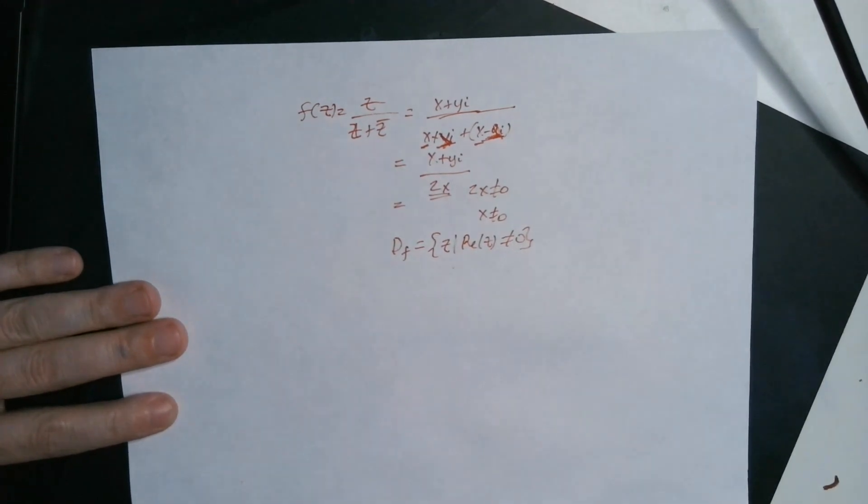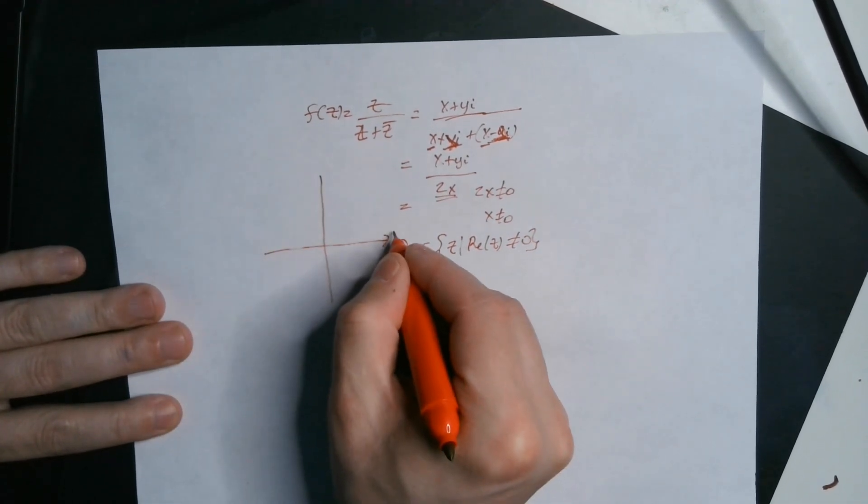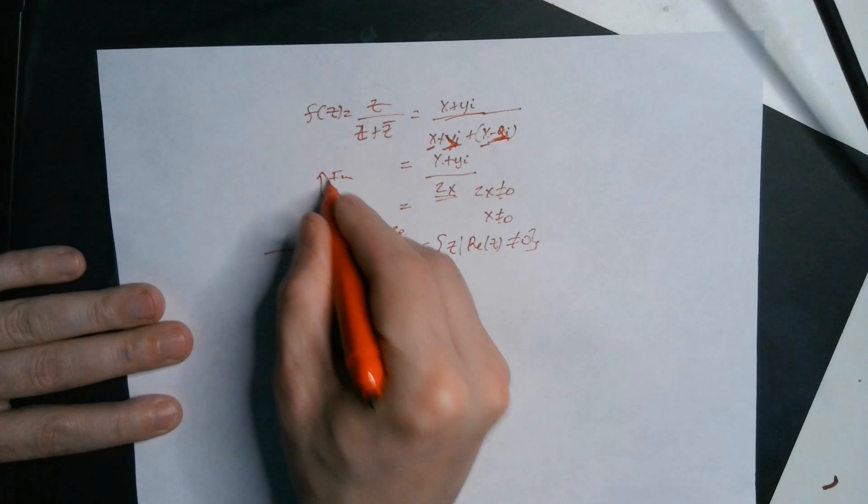Domain of f is the set of all z such that the real part of z is not equal to zero. So in terms of a picture, some people need pictures. Okay, so draw a picture. This is the real part here. This is the imaginary part here.